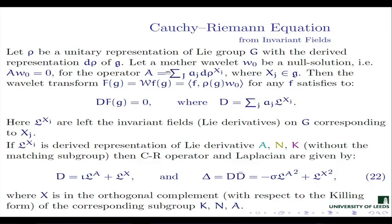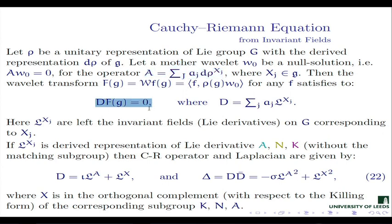So here is our statement: if we are able to annihilate the mother wavelet by means of a certain action of our Lie algebra — a linear combination of derivative representations with some coefficients — then the entire wavelet transform, by this intertwining property, will be annihilated by the corresponding right shift operators.